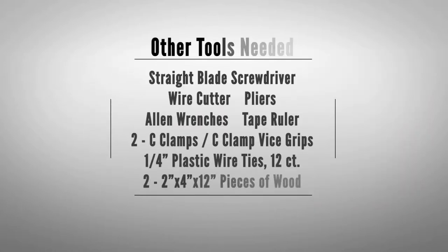Straight blade screwdriver, wire cutter, pliers, Allen wrenches, tape ruler, two C-clamps or C-clamp vise grips, one dozen 1-1/4 inch exterior plastic wire ties, and two 2-by-4-by-12 pieces of wood for each top hinge of your door.